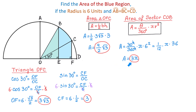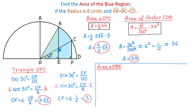Next we need to find the area of triangle OBE. Notice that this triangle has the same dimensions as triangle OFC — each has a hypotenuse of 6 units. In triangle OFC one angle is 30 degrees and the other is 60 degrees, and likewise in triangle OBE. So side OE equals side CF and side BE equals side OF. Therefore the area of triangle OBE is also 9 over 2 square root of 3.